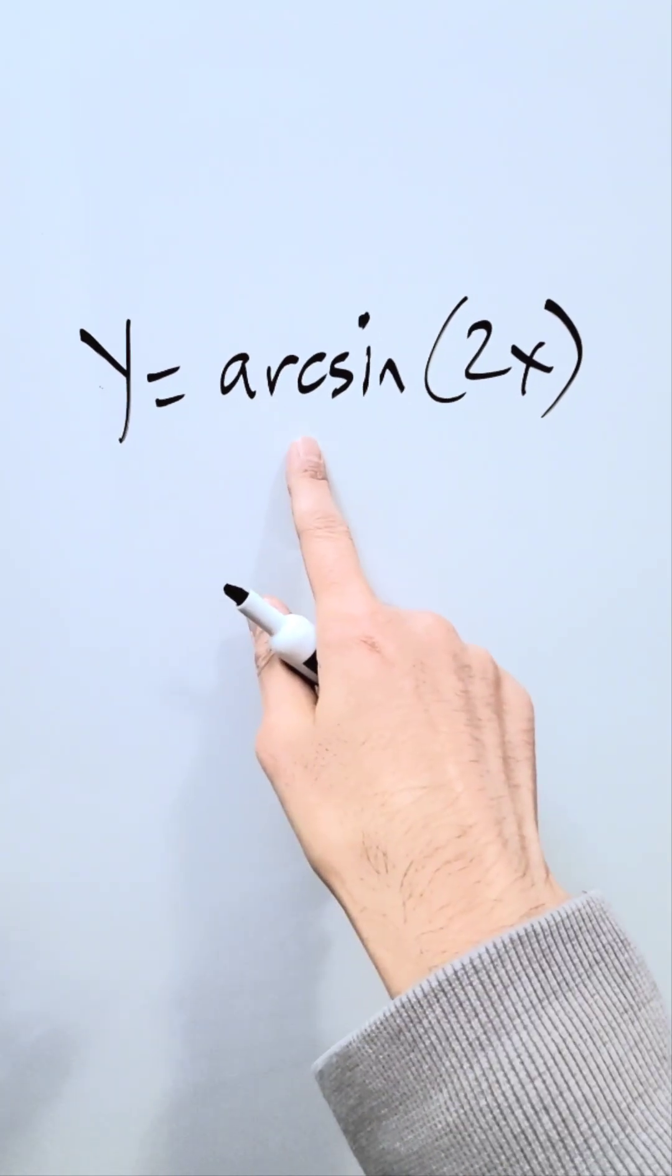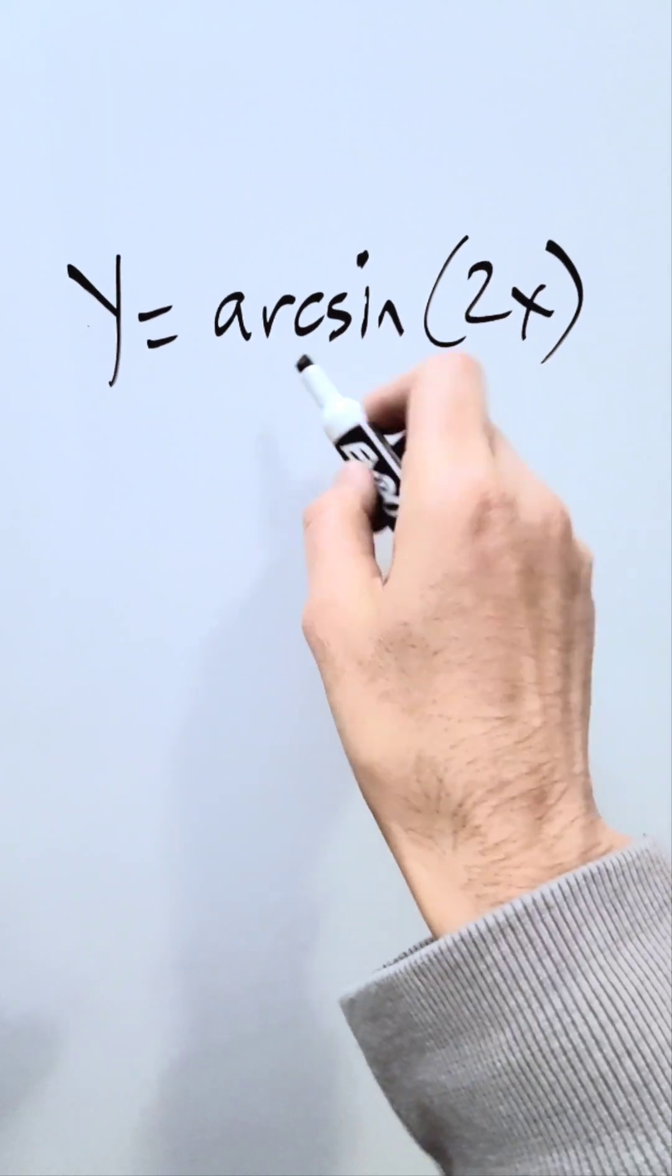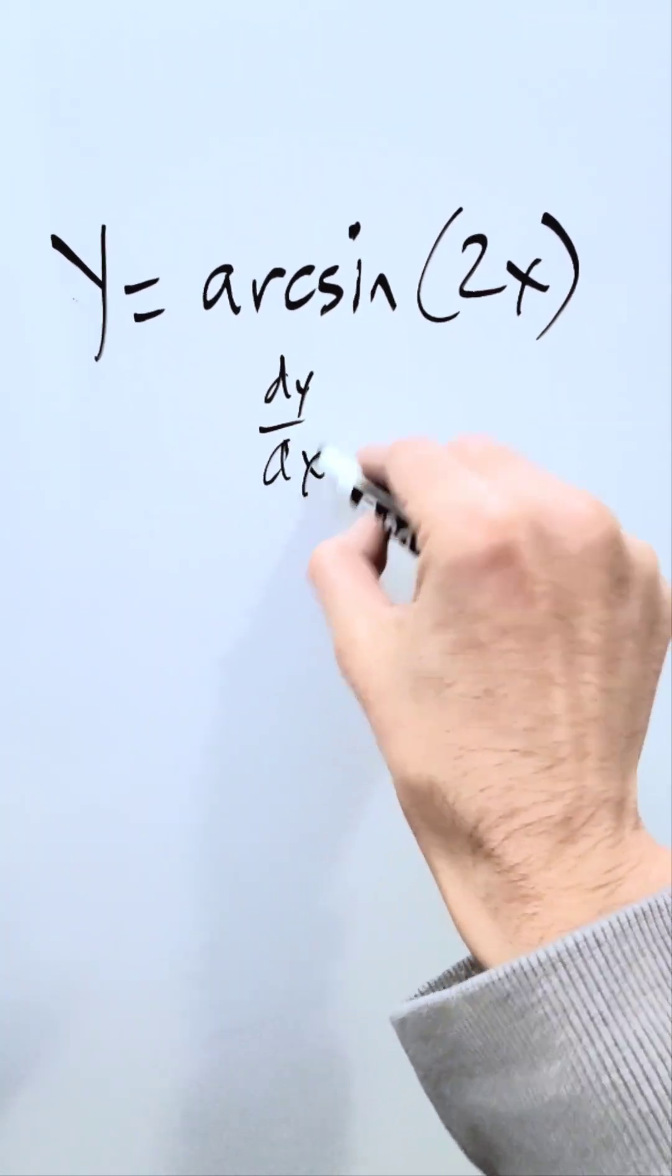Let's look over here at this function y is equal to inverse sine or arc sine 2x. Let's find the derivative using two ways. What are we looking for? dy/dx, that is the derivative.